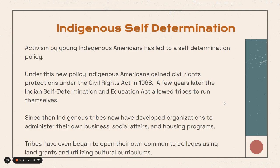Activism by young Indigenous Americans led to the self-determination policy, which is what we're under now. Under this new policy, Indigenous Americans gained civil rights protections under the Civil Rights Act in 1968. A few years later, the Indian Self-Determination and Education Act allowed tribes to run themselves. Since then, Indigenous tribes have developed organizations to administer their own business, social affairs, and housing programs. Tribes have even begun to open their own community colleges using land grants and utilizing cultural curriculums.